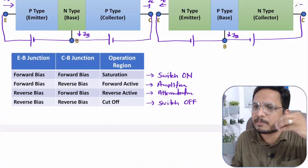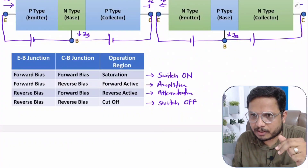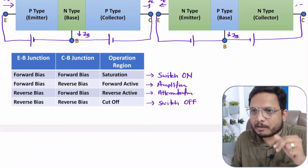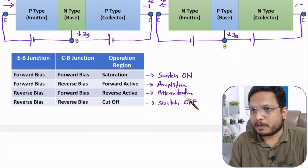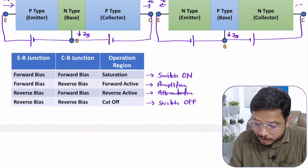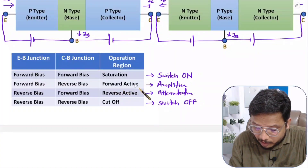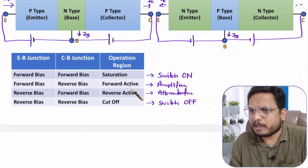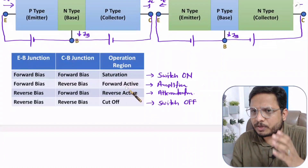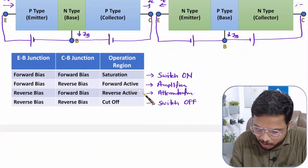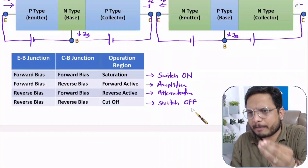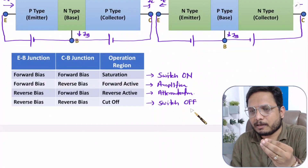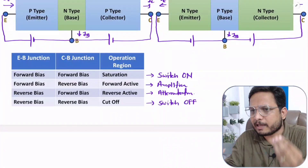Yes, in some scenarios you do need attenuation, but that comes in very few cases. That's why we use BJT in forward active in the majority of cases. In some situations you can use BJT as switch on and switch off, but that also has limited applications.